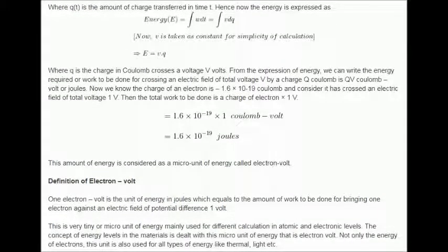This amount of energy is considered as a micro unit of energy called electron volt. Definition of electron volt: 1 electron volt is the unit of energy in joules which equals to the amount of work to be done for bringing 1 electron against an electric field of potential difference 1 V.